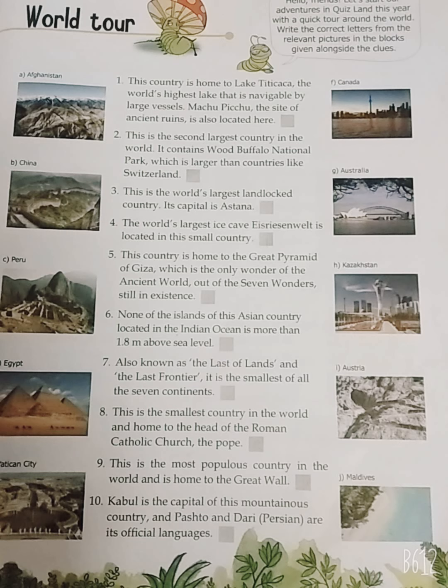Second: this is the second largest country in the world. It contains Wood Buffalo National Park, which is larger than countries like Switzerland. Yeh duniya ka doosra sabse bada desh hai, ismein Wood Buffalo National Park hai jo Switzerland jaise deshon se bada hai. Your answer is F — Canada.